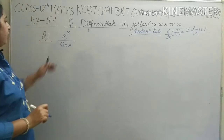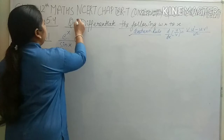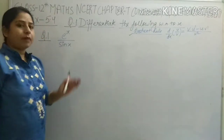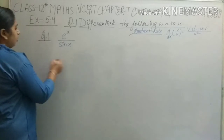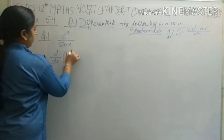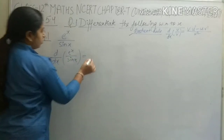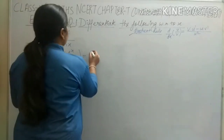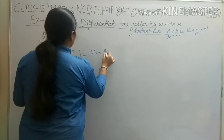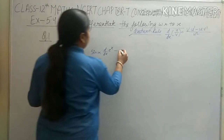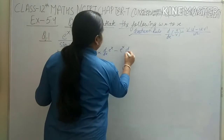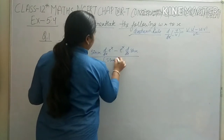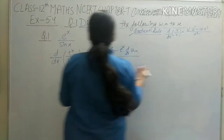Now come to question number 1. We need to find differentiation of the following terms with respect to x. Differentiation of e raised to power x upon sin x. We will apply the same quotient rule formula here. f(x) is e^x and g(x) is sin x. So first, sin x as it is and differentiation of e^x, minus numerator as it is and differentiation of sin x, upon sin x whole square.